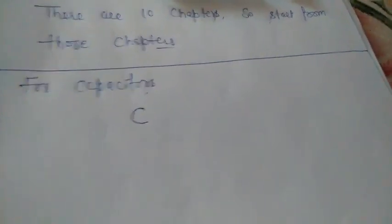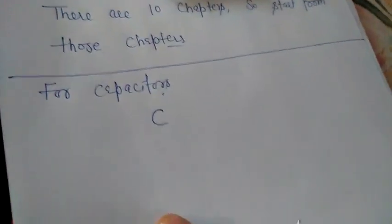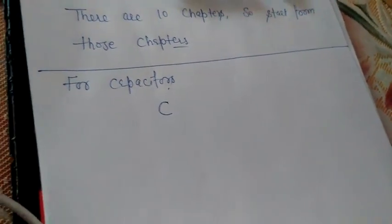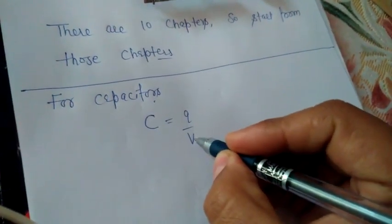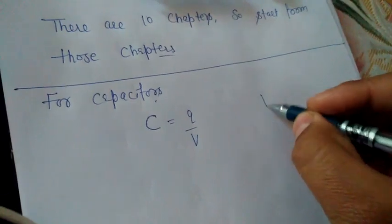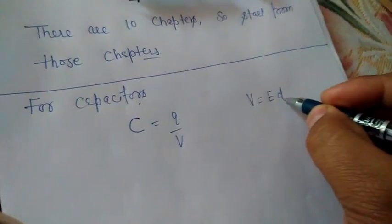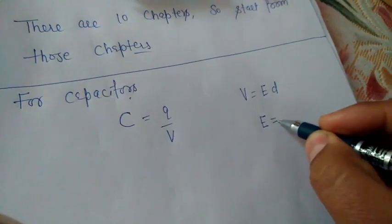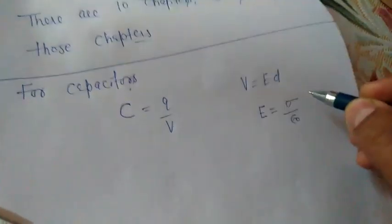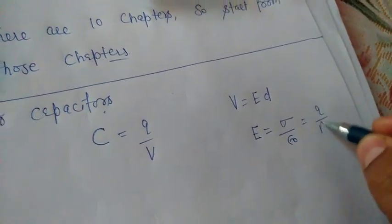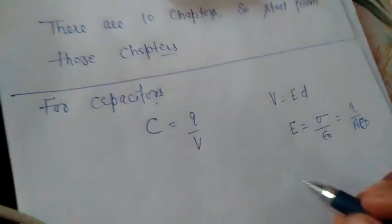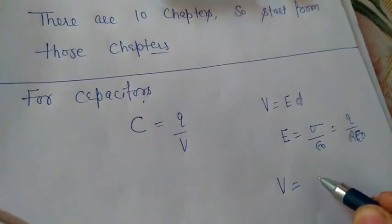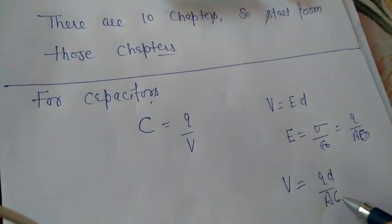For this, you can take the example of the capacitor. For example, you have to derive the result for the capacitance of a parallel plate capacitor. Just remember the result. What is the capacitance? Capacitance equal to charge per unit potential. And what is the potential in terms of the electric field? Potential is E into D. And as we know, electric field for a plane sheet is sigma over epsilon naught. And what is the sigma? Sigma is the charge per unit area. Therefore, electric field will be Q over epsilon naught A.